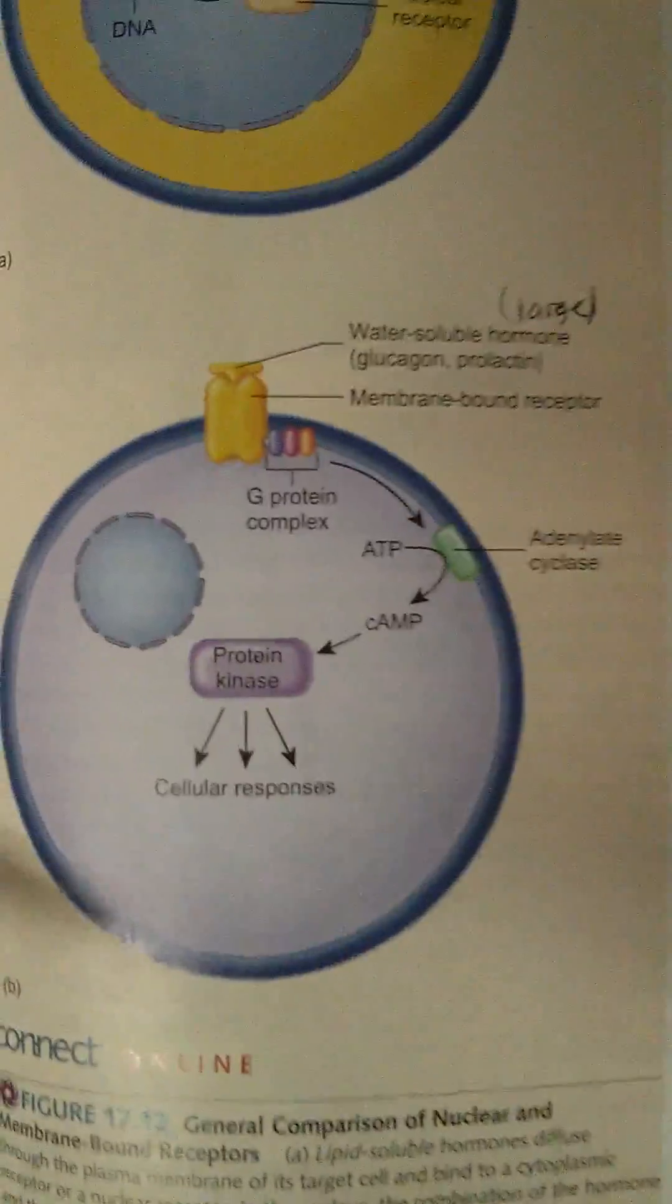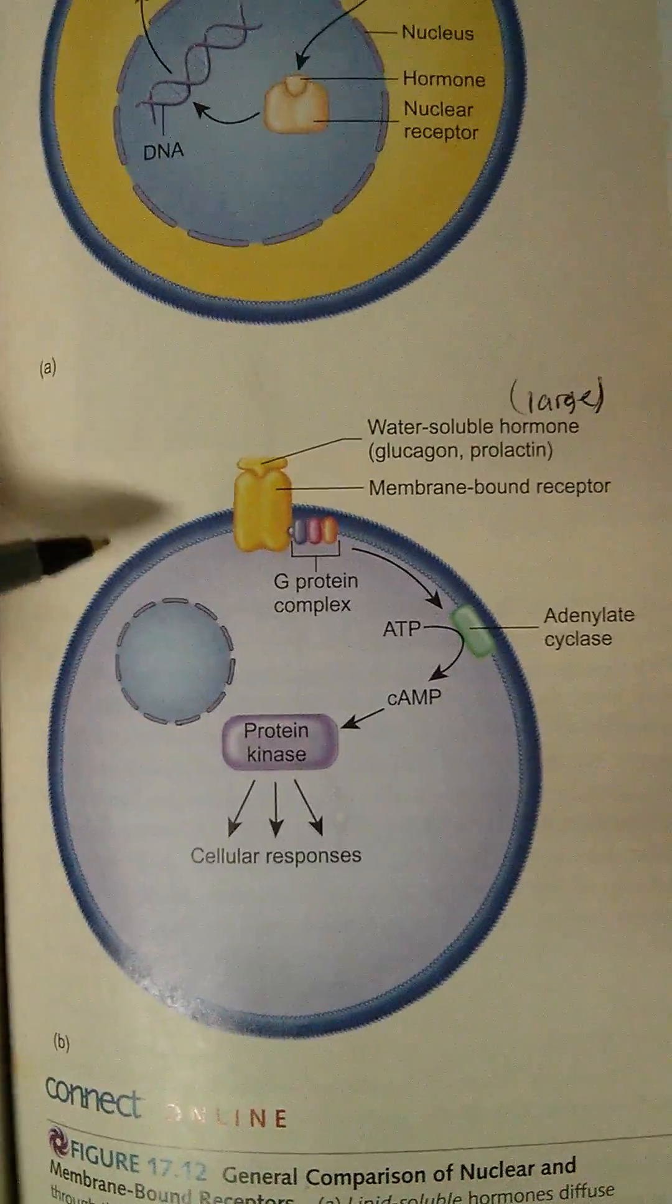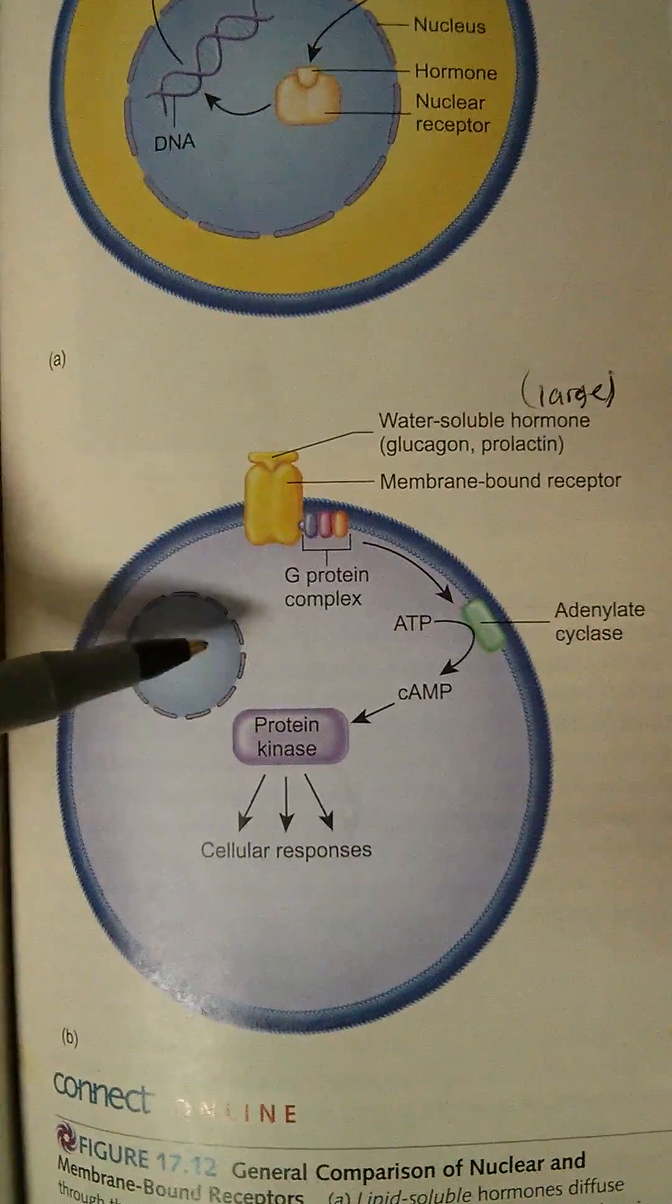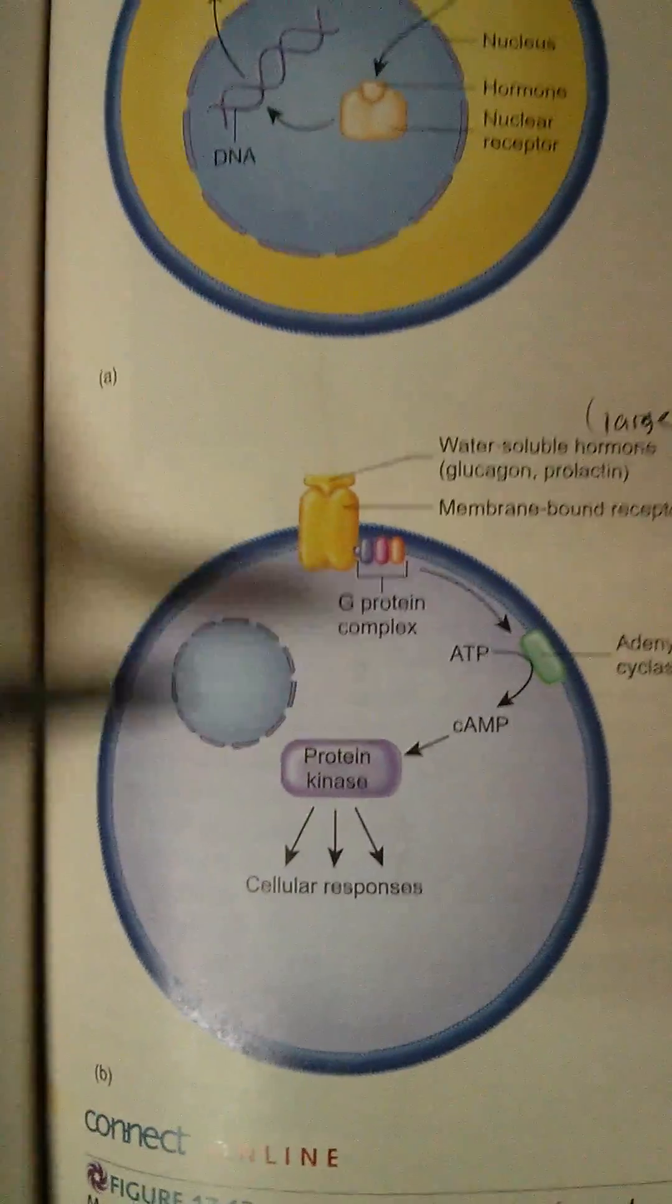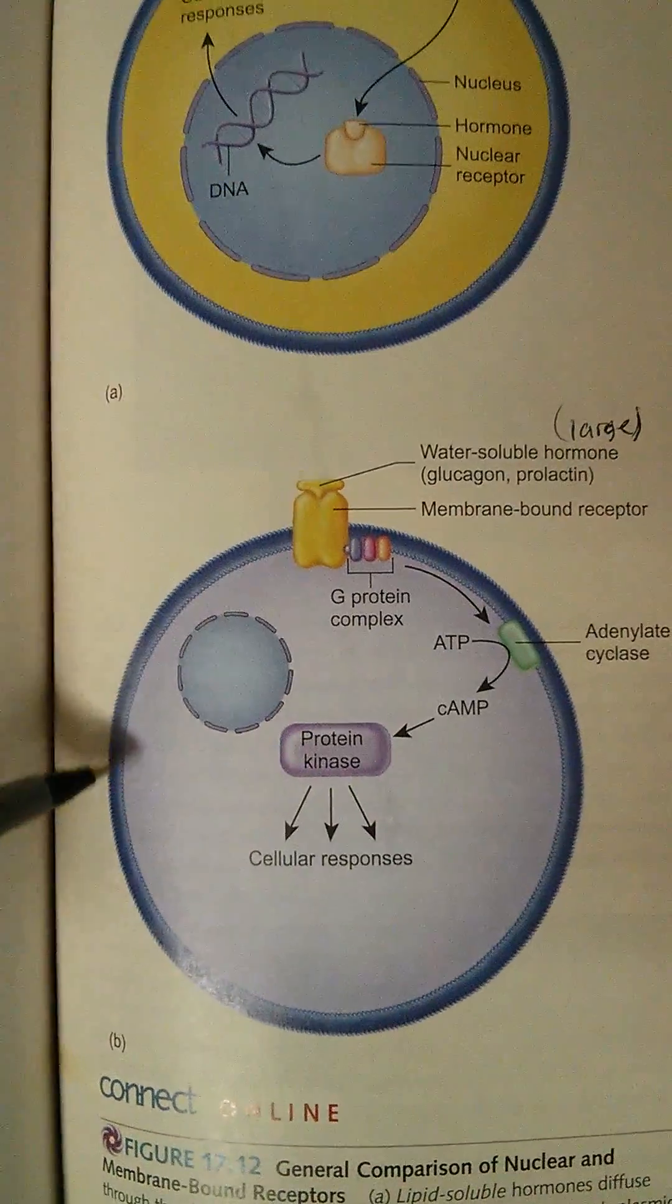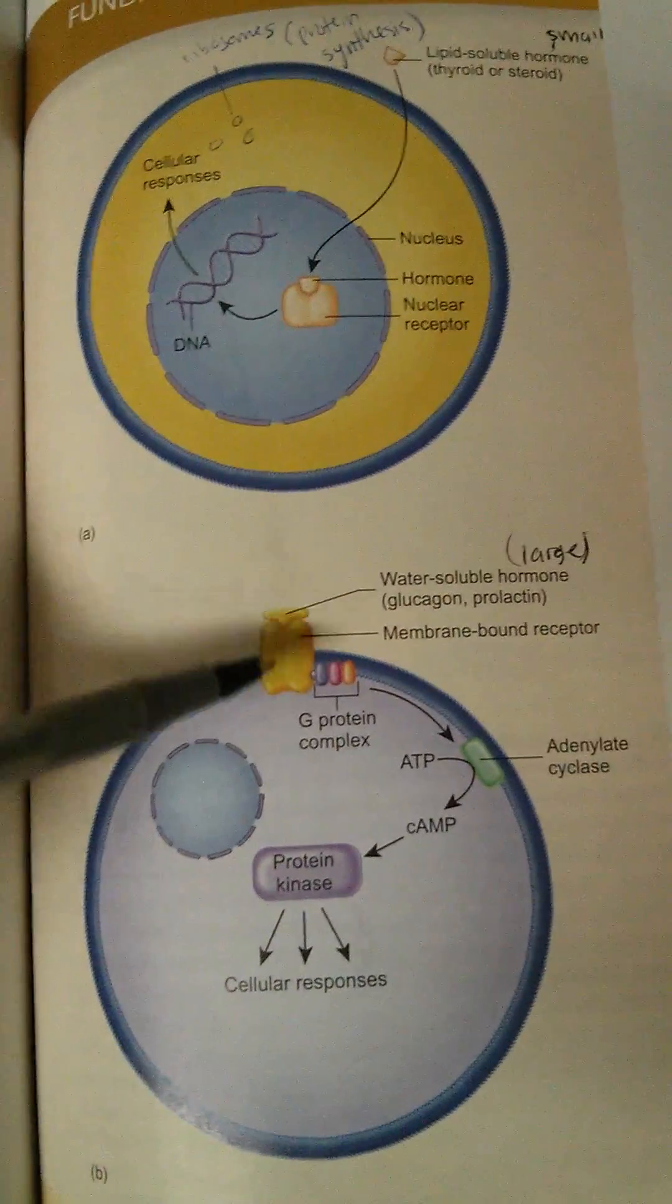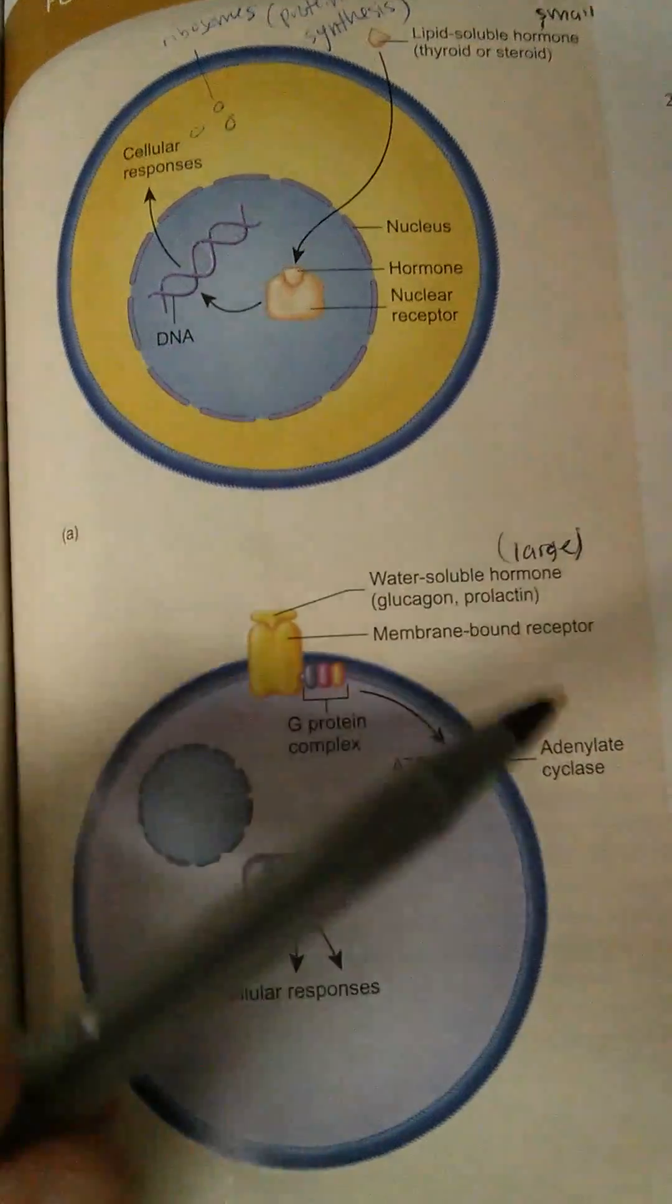Now with water-soluble hormones, the hormones are very large, so they can't actually go through the plasma membrane. So what happens is there are actually receptors that are in the plasma membrane itself. They don't show them on here, but in a plasma membrane, there are receptors. They're called membrane-bound receptors.